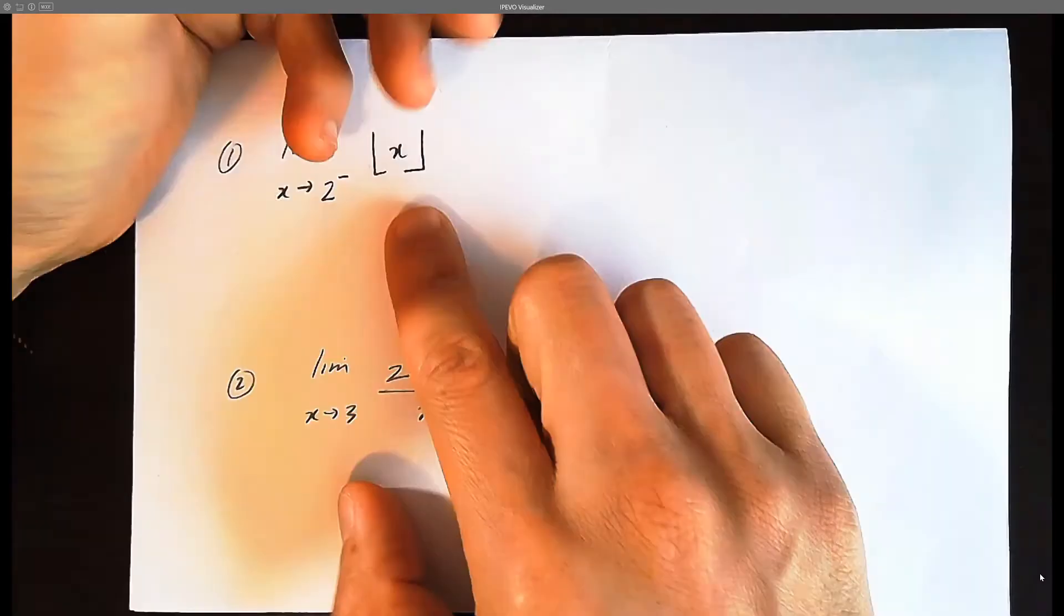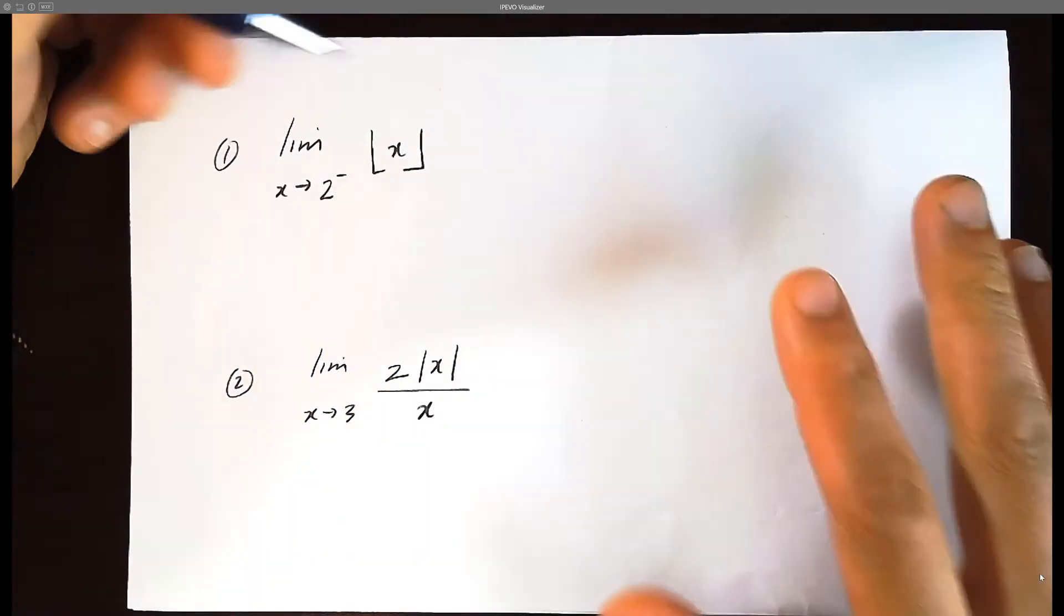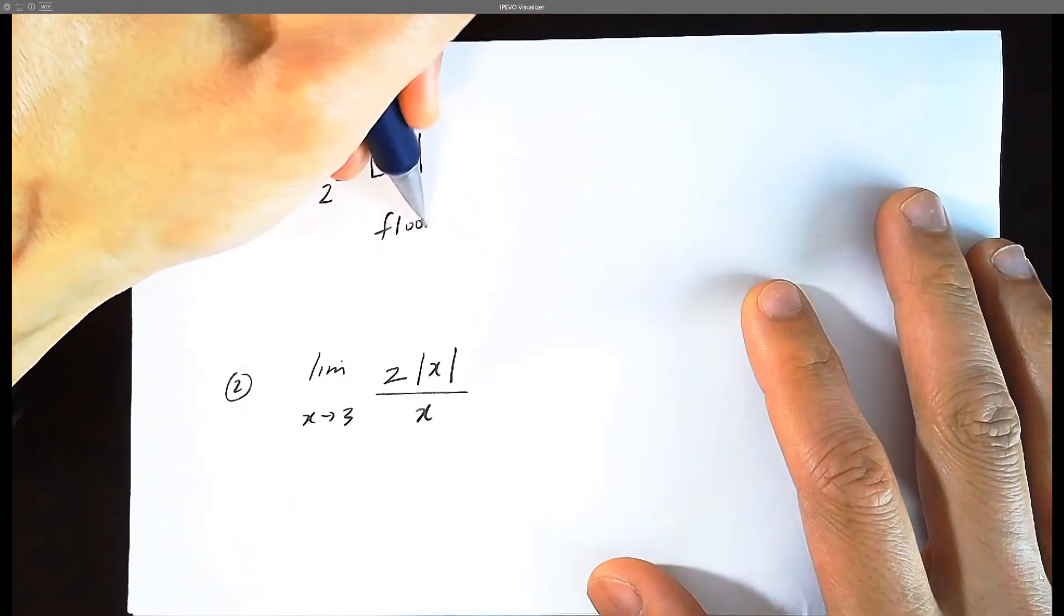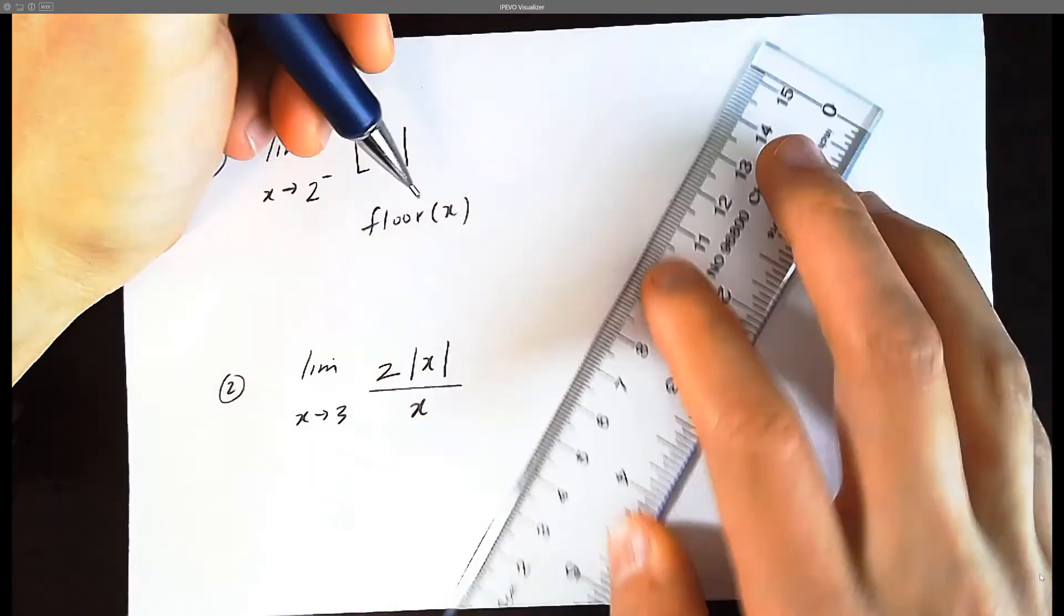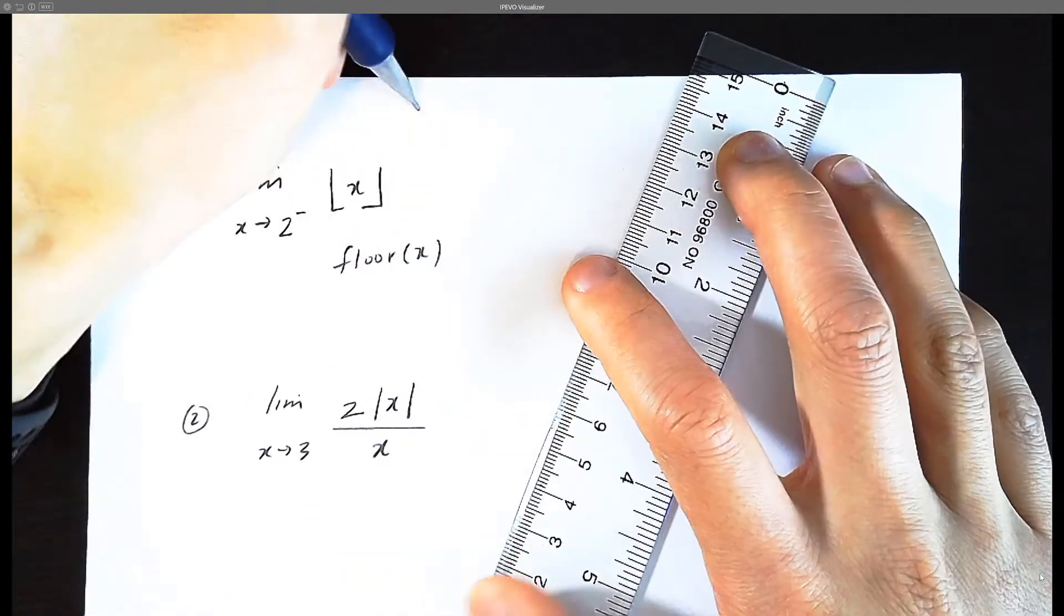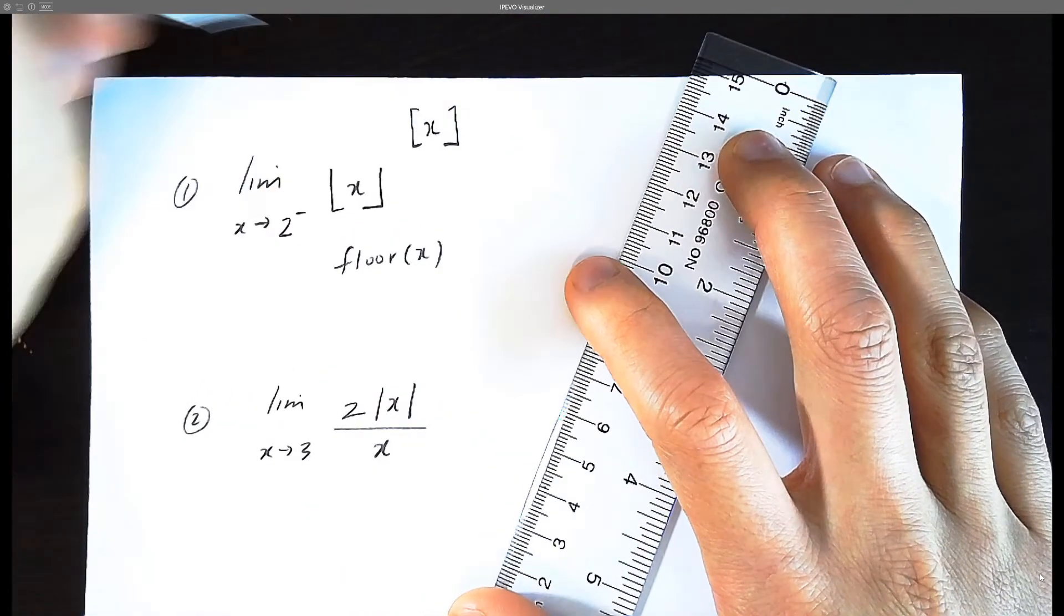So here we have the greatest integer function. This is also known as, on Desmos, the floor of x. It actually shows the graph. This is also known as the floor of x. It looks like this with a square bracket.